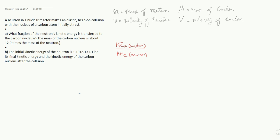Letter A. What fraction of the neutron's kinetic energy is transferred to the carbon nucleus? The mass of the carbon nucleus is about 12 times the mass of the neutron. All right, so I've bothered to write down what we're actually looking for here.